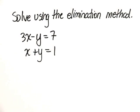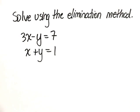Solve using the elimination method. 3x minus y equals 7, x plus y equals 1.